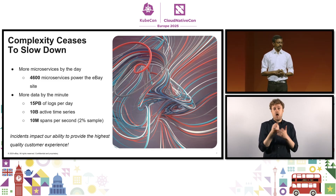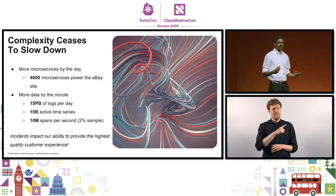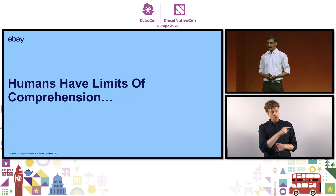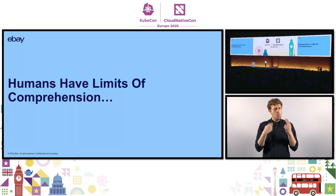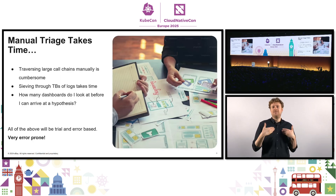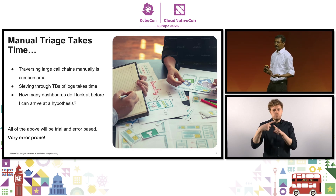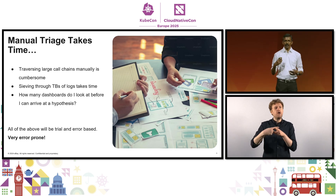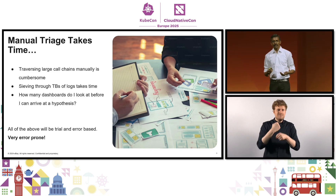Incidents impact our ability to provide the highest quality experience to our customers. The fundamental problem with the site becoming more and more complex is that as humans, we have limits to how much we can comprehend at any given point in time. If we take manual triage as an example, the time it takes to traverse a very long call chain is a lot. The amount of time it takes to see through terabytes worth of logs is a lot. How many dashboards do I have to look at before I can arrive at a hypothesis? All of these are trial and error based, and usually there are a lot of errors before we land on what is right.